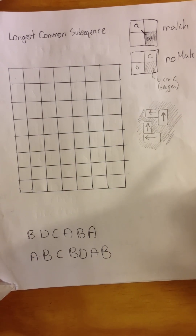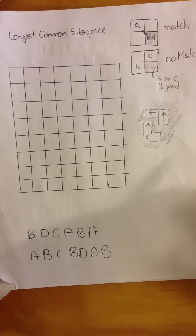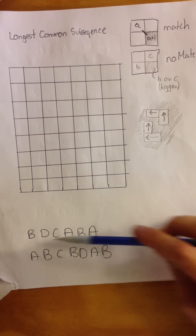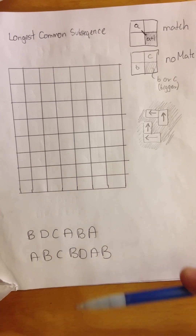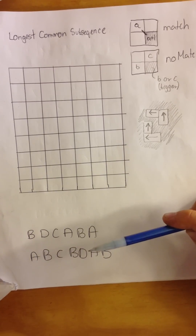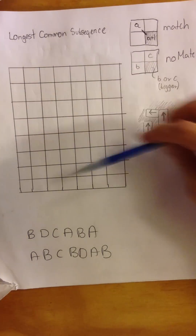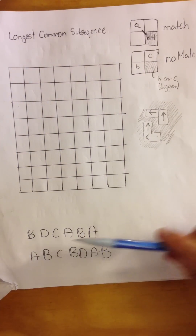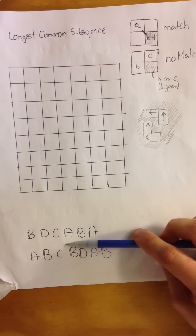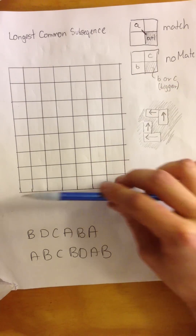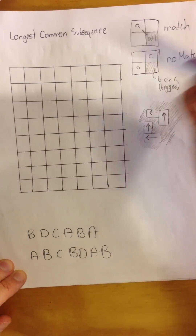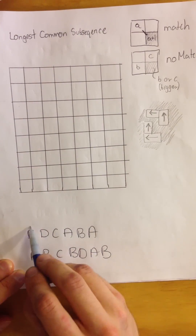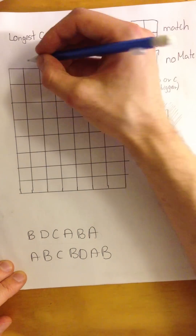In this video I'm going to show you how to fill out a table for the longest common subsequence algorithm. The challenge is that we have two sequences and would like to find out what's the longest common subsequence. We have a table and we take those sequences and insert them on the axes. It doesn't really matter which sequence goes to which axis, so let me take the first sequence to the x-axis.